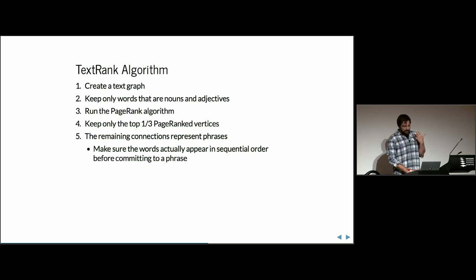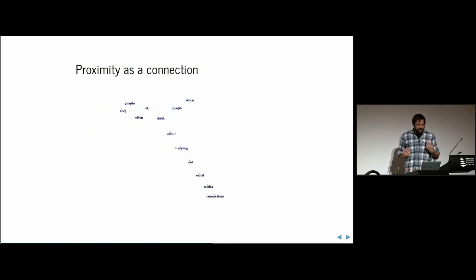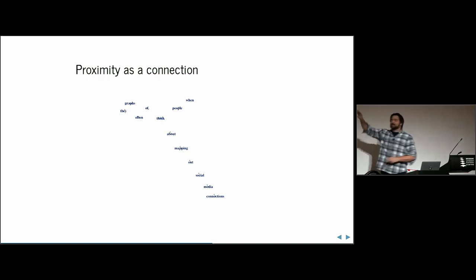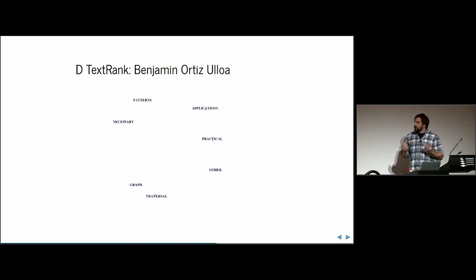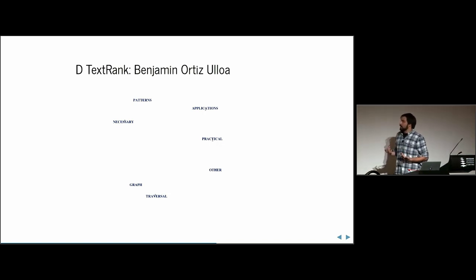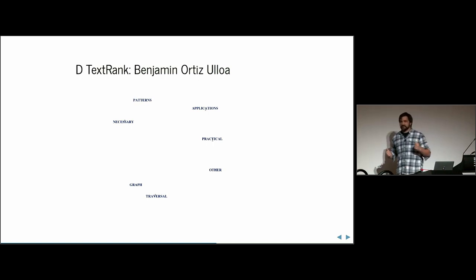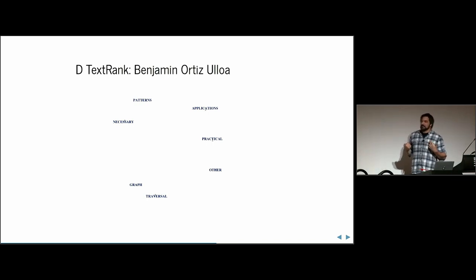To give an idea of what a text graph looks like: the relationship is proximity — first this word, then this word, then this word — that's the first sentence of the abstract. When we run the algorithm on the full abstract, the key concepts that come out include 'graph traversal,' which is absolutely a concept I care about, along with other practical applications. In the abstract I talk about how network analysis is so much more than just Twitter data.